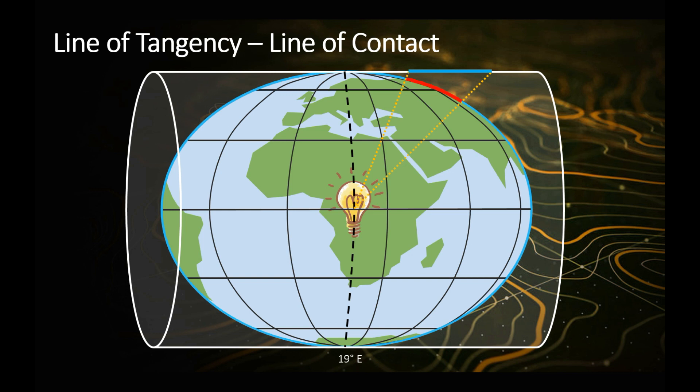The further you move away from your point of contact, the greater the distortion will be. That's why we would try and use a longitudinal line as close to our study area as possible, to reduce the amount of distortion, which will affect our area calculations, perimeter calculations, and length calculations. So that's why the line of tangency becomes important when you choose your longitudinal line.